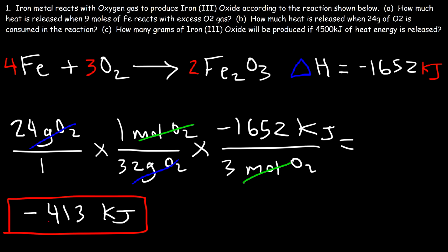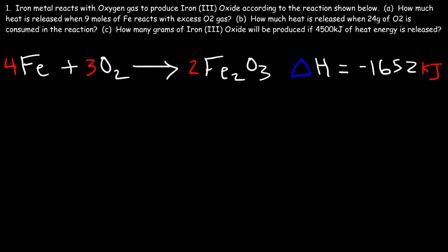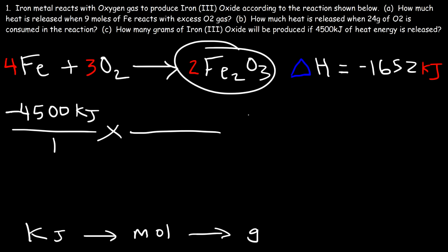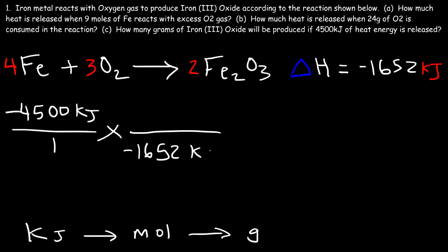That's how much heat will be released if 24 grams of O2 reacts. Now let's move on to Part C: how many grams of iron(III) oxide will be produced if 4500 kilojoules of heat energy is released? This time we're given the amount of kilojoules and need to convert it back to moles and then to grams. We start with negative 4500 kilojoules. We convert from kilojoules to moles using the fact that 2 moles of iron(III) oxide corresponds to 1652 kilojoules.